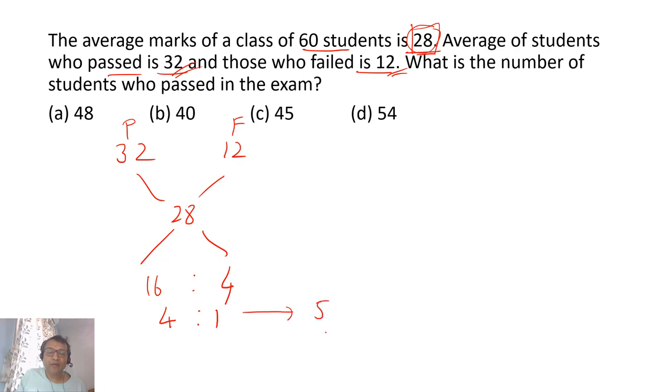Now 4 plus 1 is 5. Five stands for 60. Five stands for total students, which is 60. So number of students who passed will be: 5 × 12 = 60, so 4 × 12 = 48. So you will get the answer is option A.